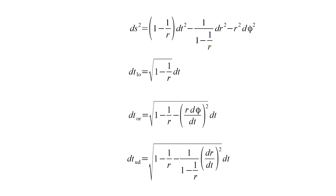The up-down triplet moves in the radial direction r, but not in the angular direction phi. His ds, which we call dt up-down, therefore has an r velocity term instead of a phi velocity term.